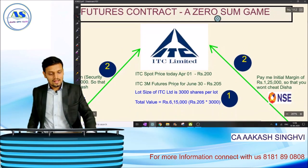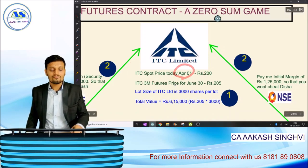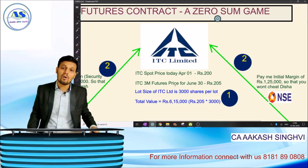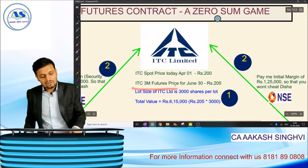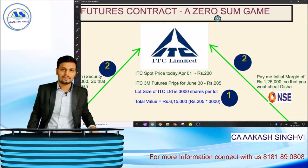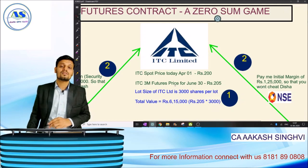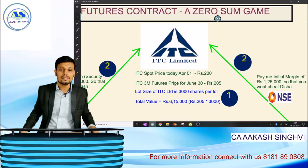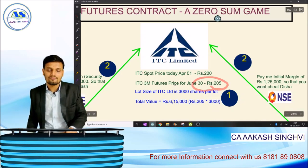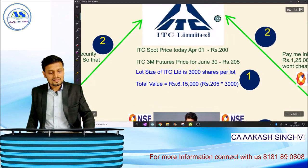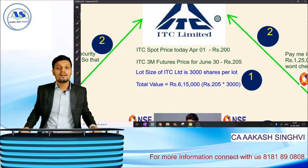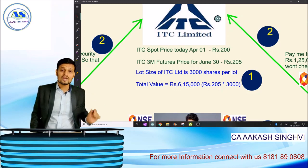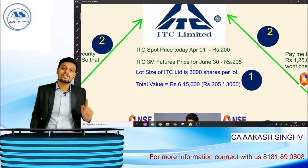Let's look at ITC's prices. The ITC spot price as of today — let us assume it is April 1st — is rupees 200; it is trading at rupees 200 in the spot market. The futures price as of today is rupees 205 per share. So today's futures price for June 30 expiry is 205. The lot size of ITC in my example is 3000 shares — practically on the stock market one lot of ITC is 2400 shares, which I will show you.